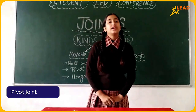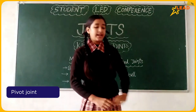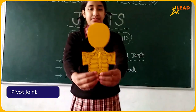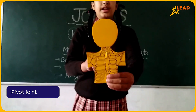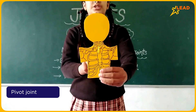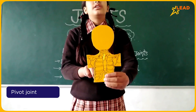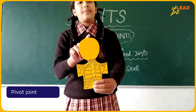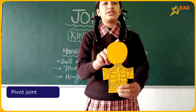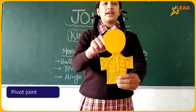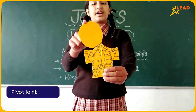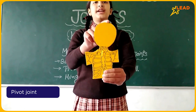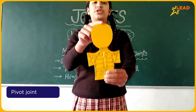Pivot joint. It connects the head and the neck. It allows us to bend our neck forward and backward, and also allows us to turn our neck right to left. This is a pivot joint.